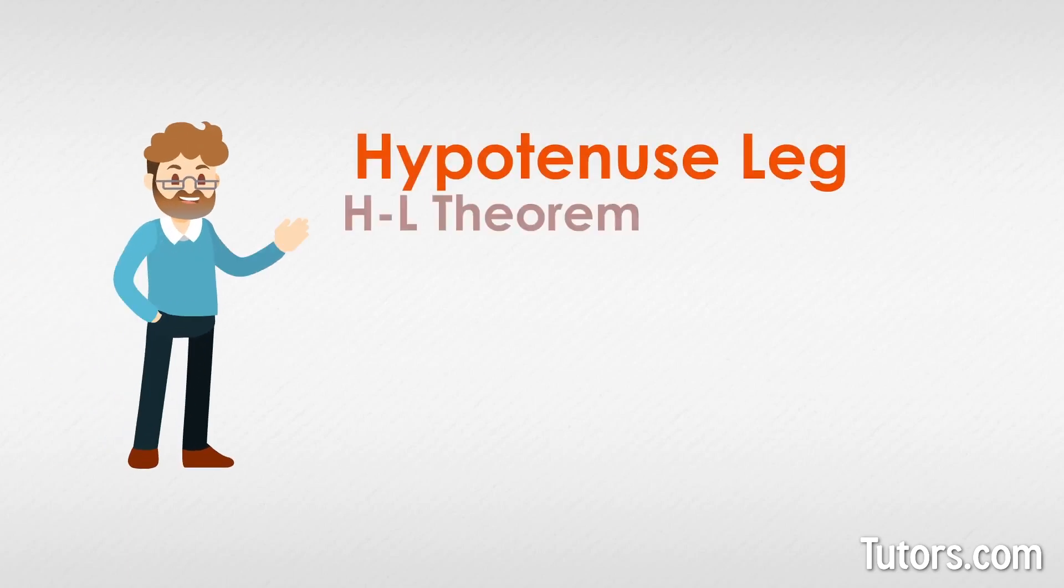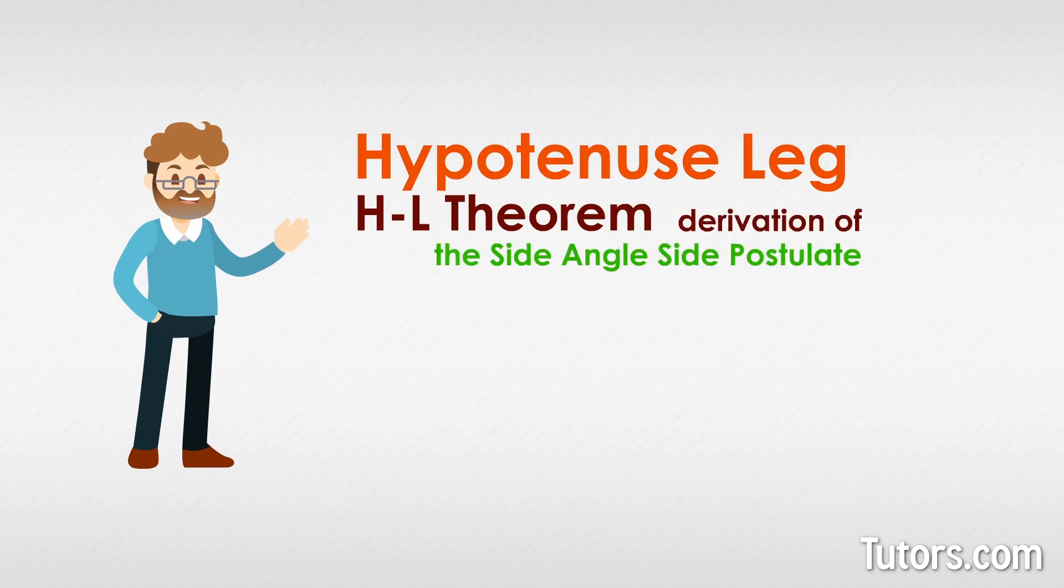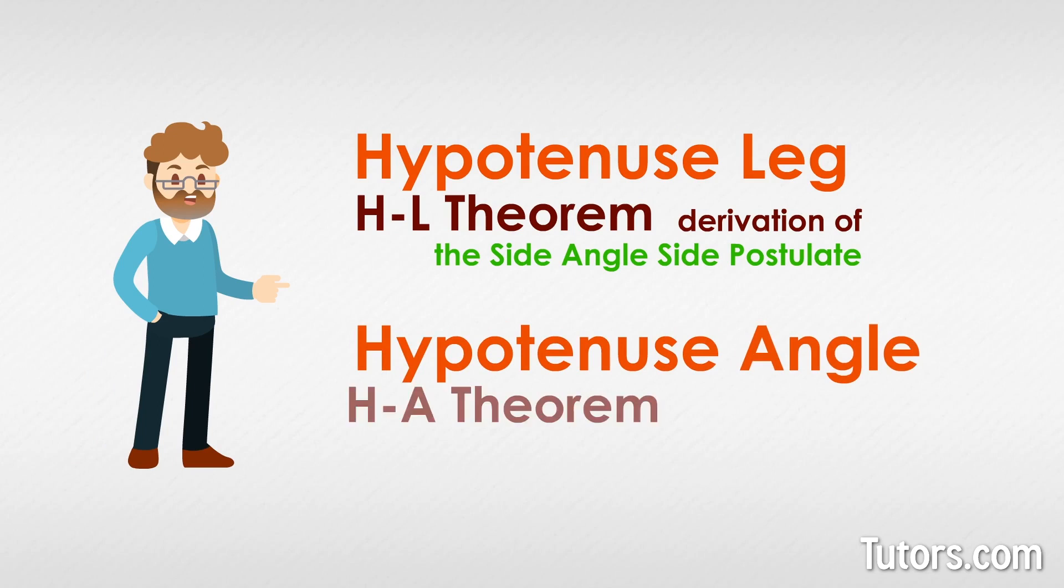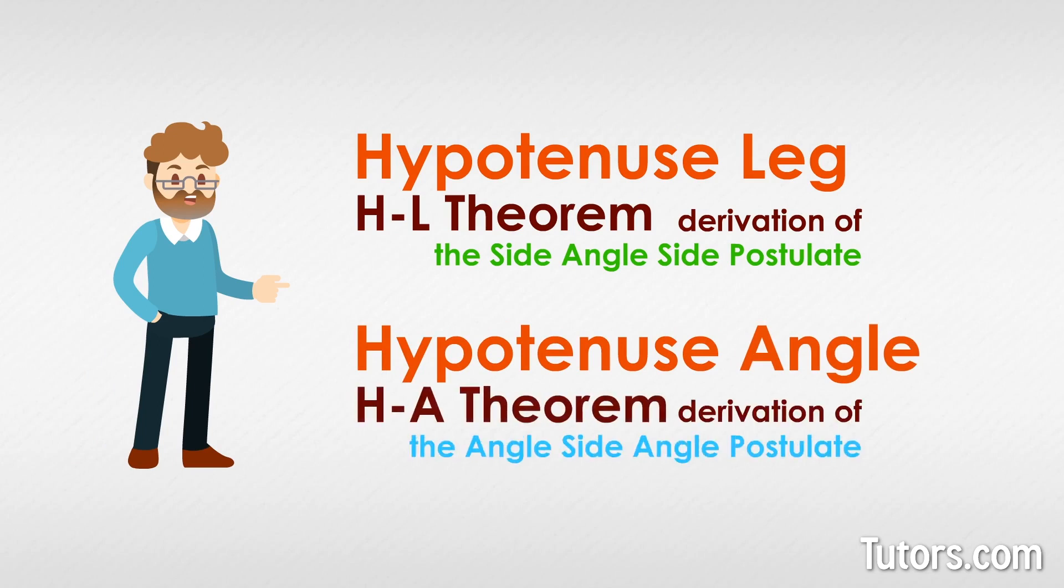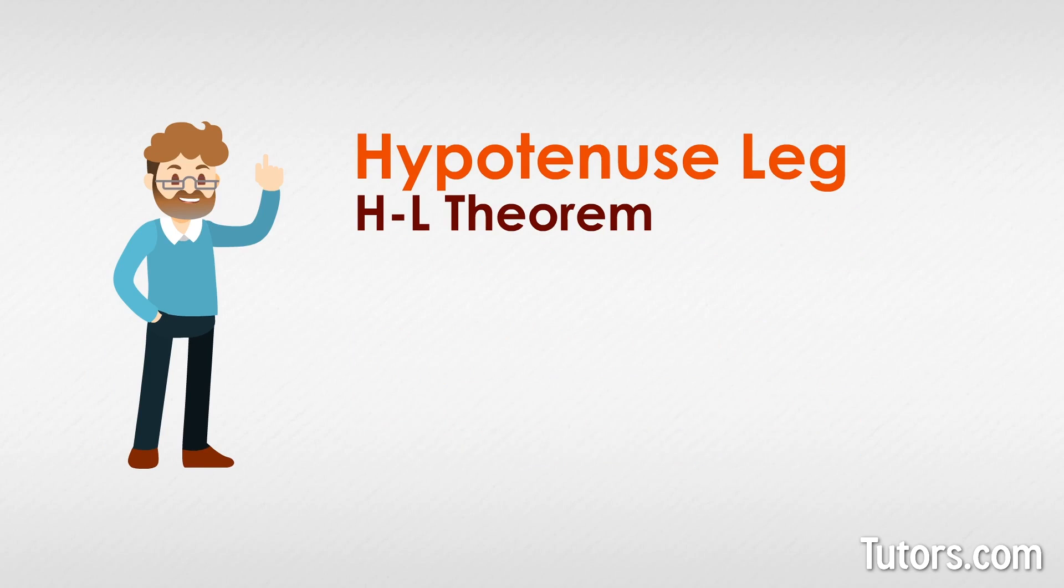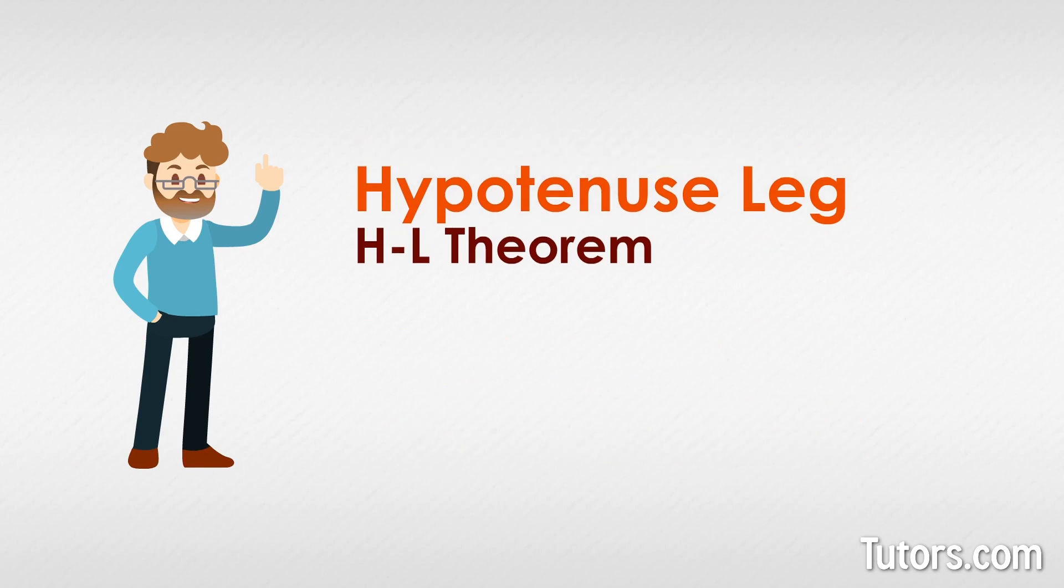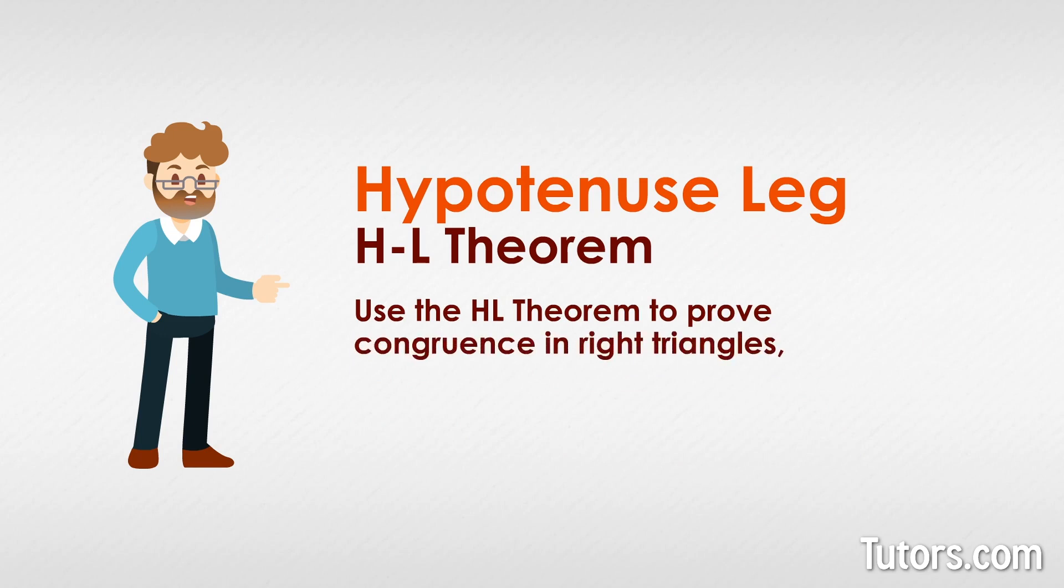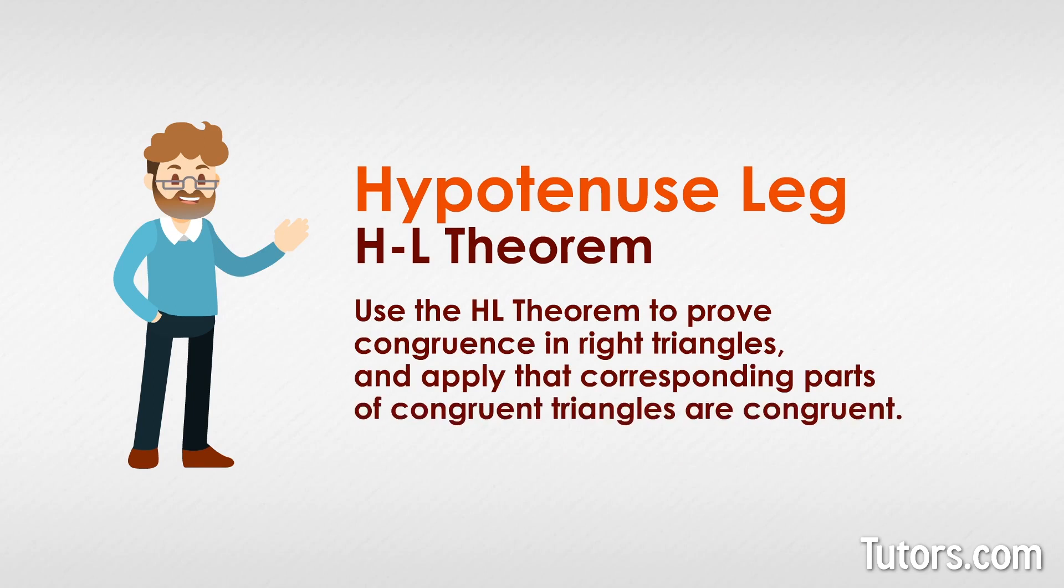The hypotenuse leg or HL theorem is useful. This theorem is really a derivation of the side-angle-side postulate, just as the HA theorem is a derivation of the angle-side-angle postulate. In this lesson, you will learn about the hypotenuse leg HL theorem, use the HL theorem to prove congruence in right triangles, and apply that corresponding parts of congruent triangles are congruent. Let's get started.